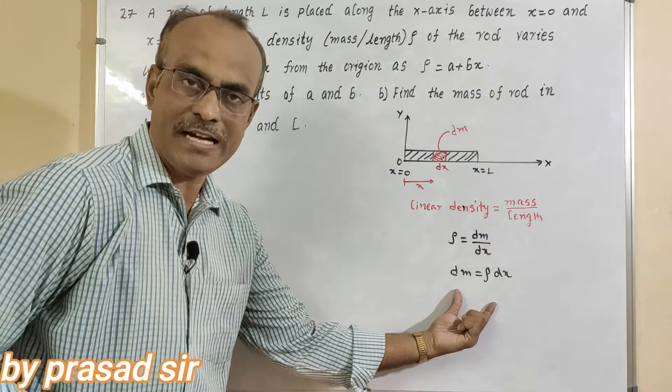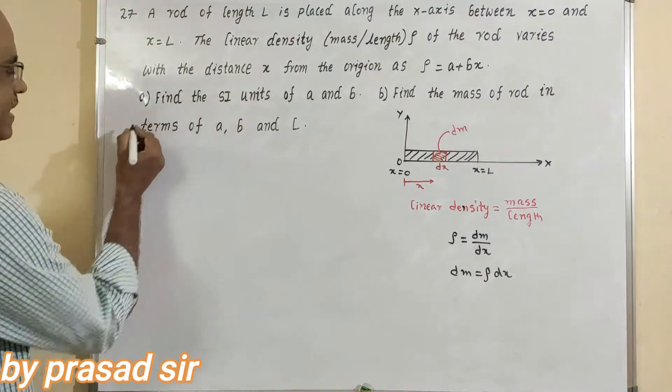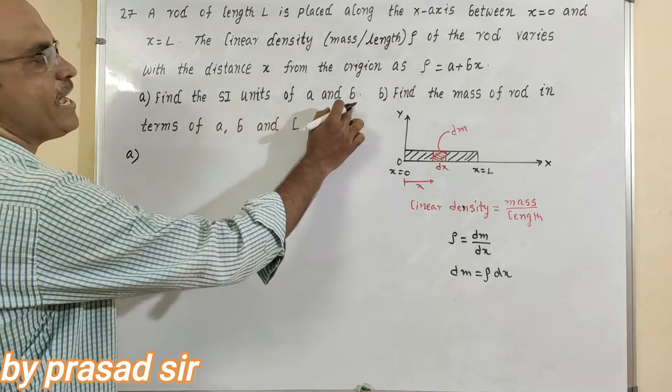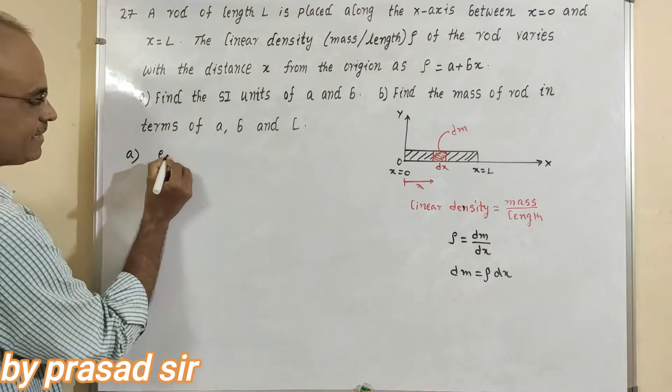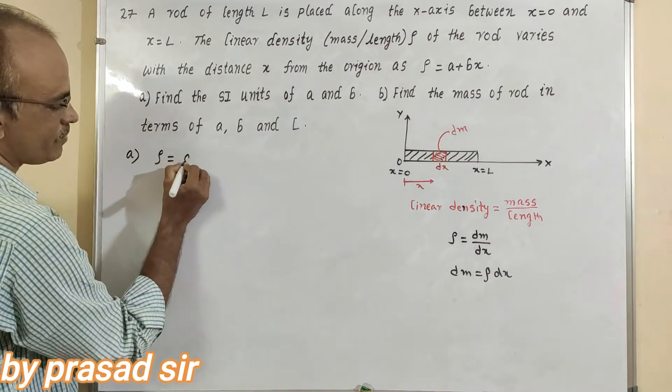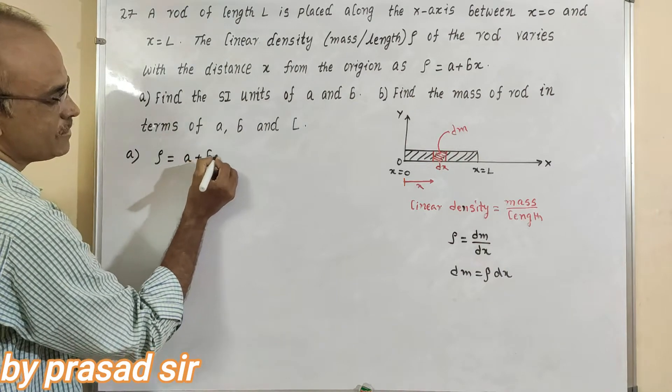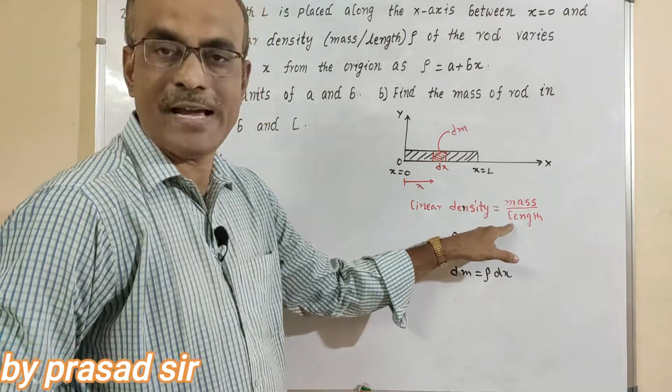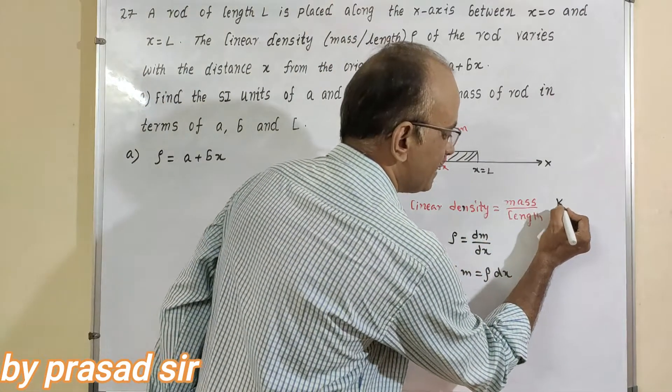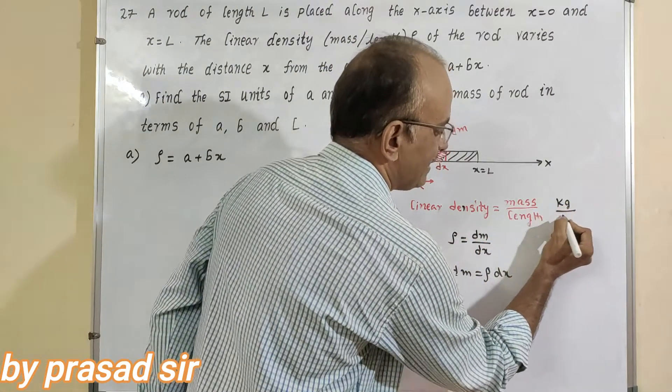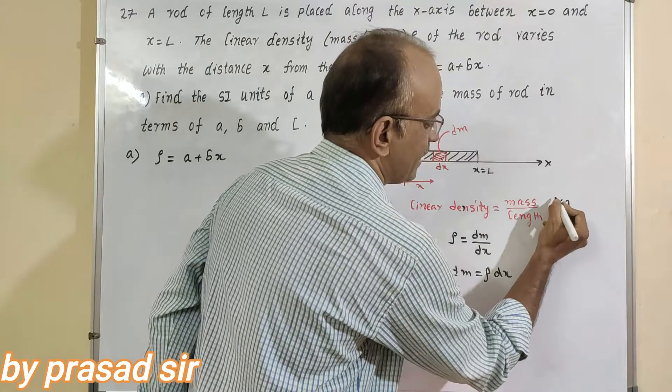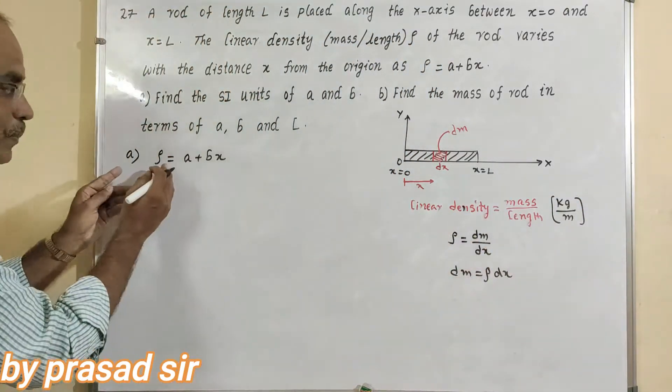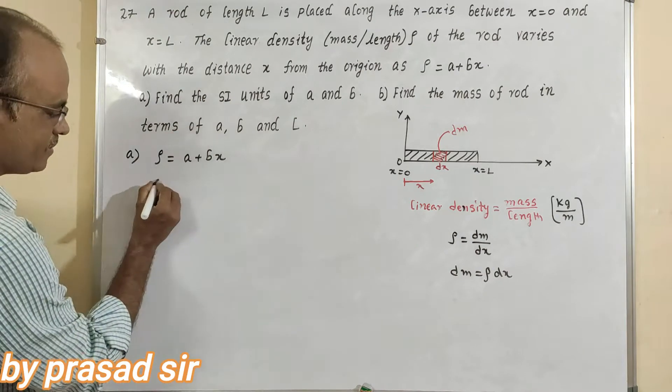This is represented like this. Now to answer part A, find the measurements of A and B using this. I will write like this: rho equals A plus Bx. So your linear density is mass by length. Mass expressed in terms of kilograms and length expressed in terms of meters. Remember, this is very important.